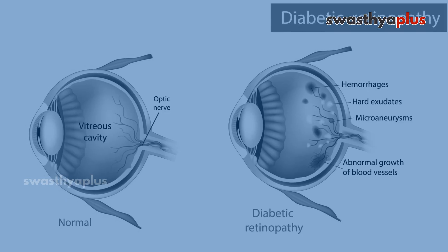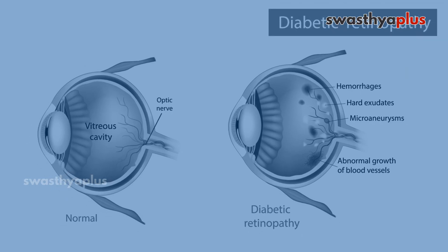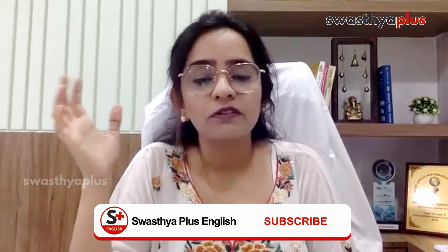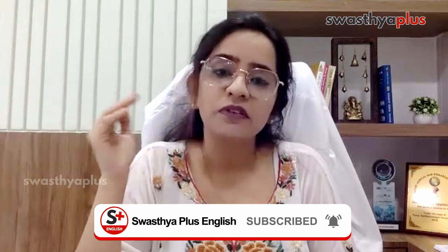Medically, we classify diabetic retinopathy as proliferative and non-proliferative. Non-proliferative is the early stage where vision is less affected — we see hemorrhages and exudates, which is the medical term for swelling from damaged blood vessels. As diabetes progresses, new but very fragile blood vessels grow on the retina, causing more harm. This is called proliferative retinopathy.